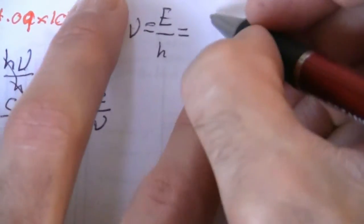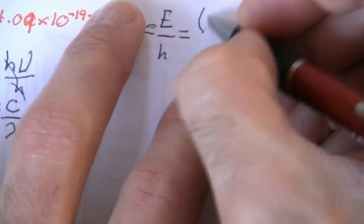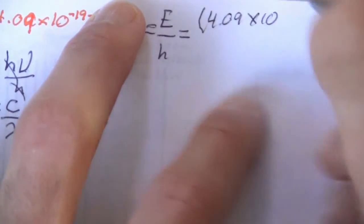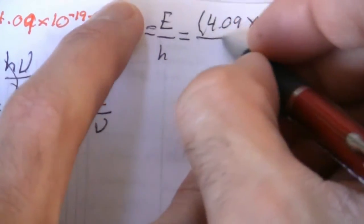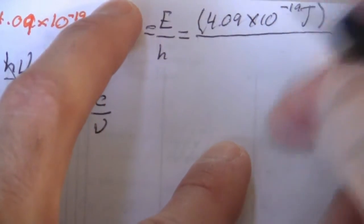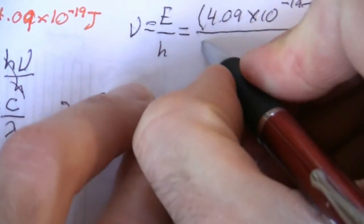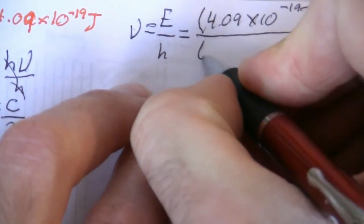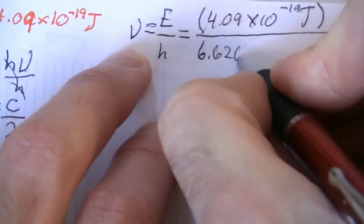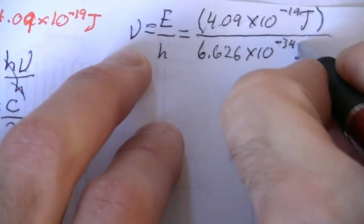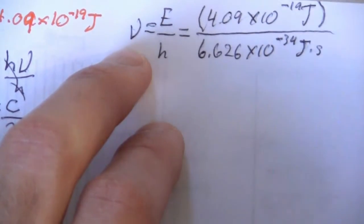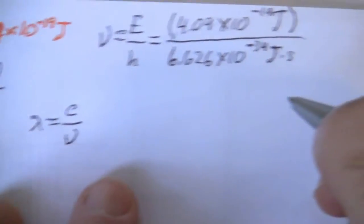Up here I have 4.09 times 10 to the minus 19th joules. And then on the bottom, I have Planck's constant. Again, this would be given on a test. That's going to be 6.626 times 10 to the minus 34th joules times seconds.